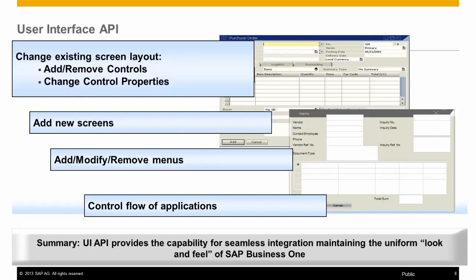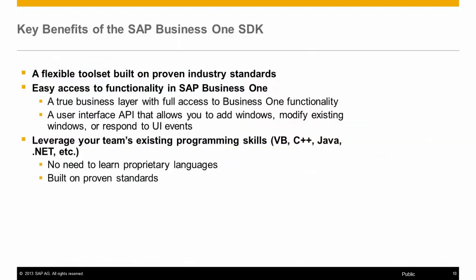We can also create our own forms that have the same look and feel as an SAP Business One form. This allows for a seamless user experience. Key benefits of the SAP Business One SDK are a flexible tool set built on proven industry standards, with easy access to functionality in SAP Business One through a true business layer with full access to Business One functionality, and a user interface API that allows us to add windows, modify existing windows, and respond to UI events.